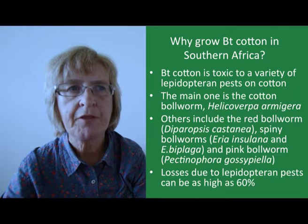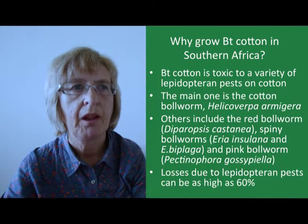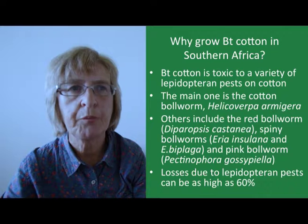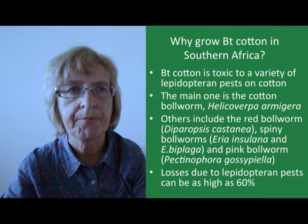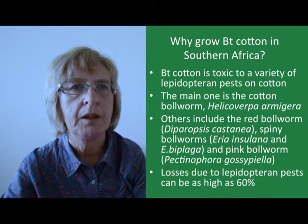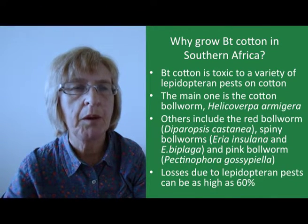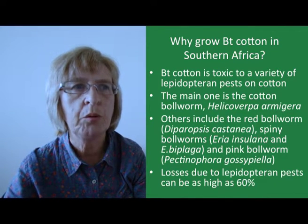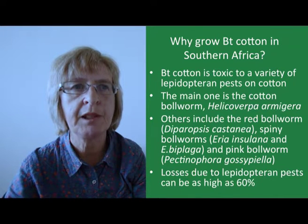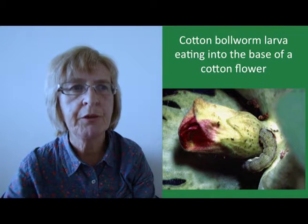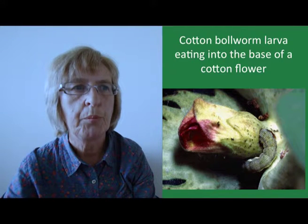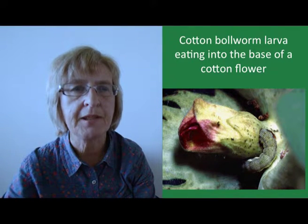Why should we be interested in growing BT cotton in southern Africa? There are a number of Lepidopteran pests that infest the cotton crop and that can be controlled by BT. The main one is the cotton bollworm, but there is also the red bollworm, two species of spiny bollworm and the pink bollworm. These can all cause major damage to the crop, sometimes leading to losses as high as 60%. This photo shows a cotton bollworm boring its way right into the base of a cotton flower.